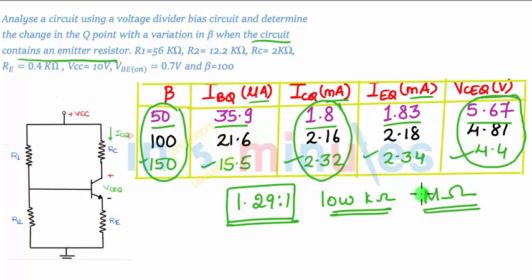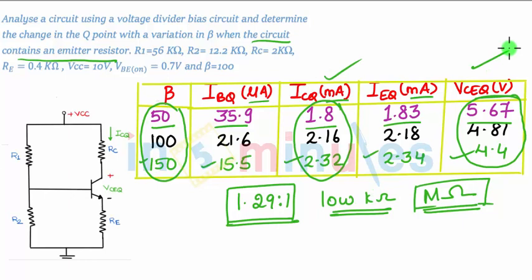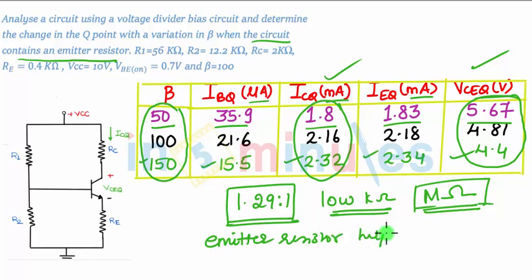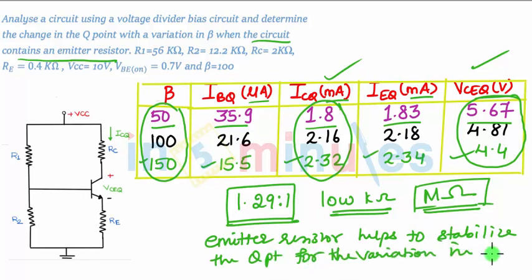Single resistor biasing requires mega-ohms. Therefore, the change in ICQ and VCEQ with the change in beta has been reduced compared to fixed bias. This means that including the emitter resistor in the circuit helps to stabilize the Q point for variation in beta.